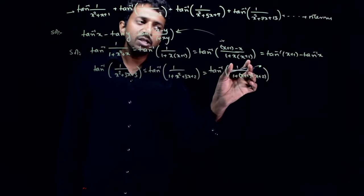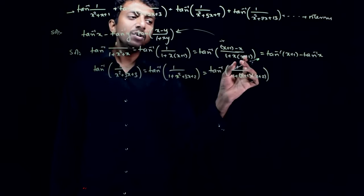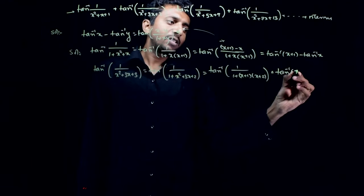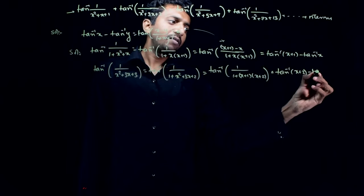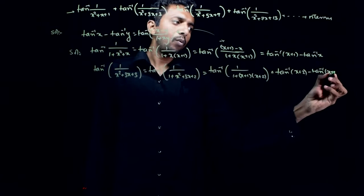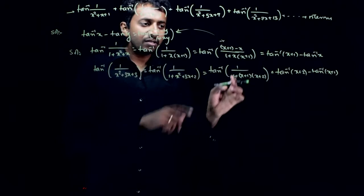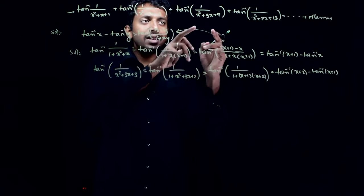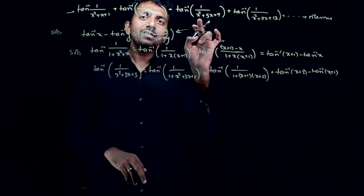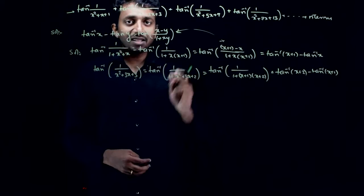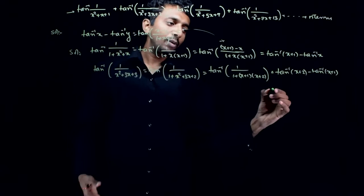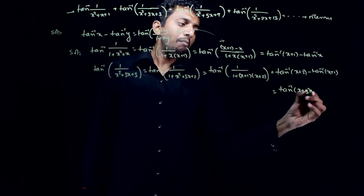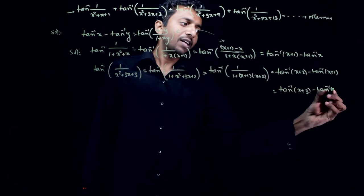This will be equal to tan inverse of (x plus 2) minus tan inverse of (x plus 1), which simplifies to tan inverse of (x plus 3) minus tan inverse of (x plus 2).